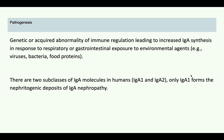Now going to the pathogenesis: there is either a genetic or acquired abnormality in immune regulation. Some HLA associations have been identified, leading to an abnormality in immune regulation, which leads to increased IgA synthesis in response to any respiratory or GI exposure to environmental agents.